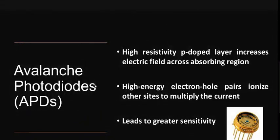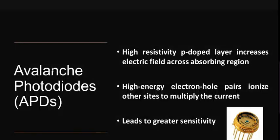Why is it called an avalanche photodiode? The previous one was PIN — called PIN because p-type and n-type are combined together to form that photodetector. It is called avalanche because the avalanche effect takes place, which is the multiplication of charge carriers within the depletion region. Electron hole pairs get multiplied, resulting in avalanche breakdown.